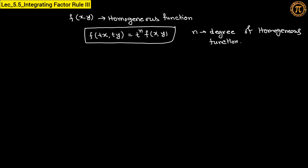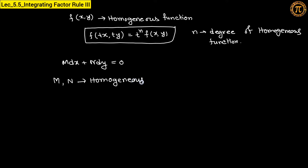In Rule Number 3 we use this concept of homogeneous functions. Suppose we have an equation M dx plus N dy equals 0 — a non-exact equation. Rule Number 3 applies when M and N are both homogeneous functions with the same degree. For example, if M is homogeneous of degree 3 but N is homogeneous of degree 2, you cannot apply Rule 3. The degrees must match.